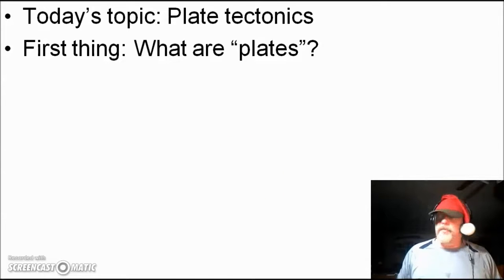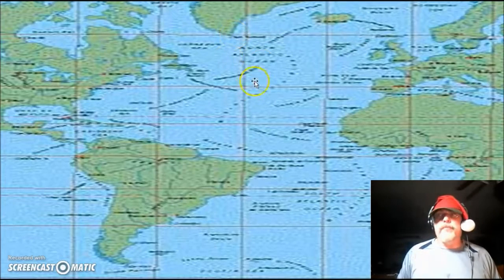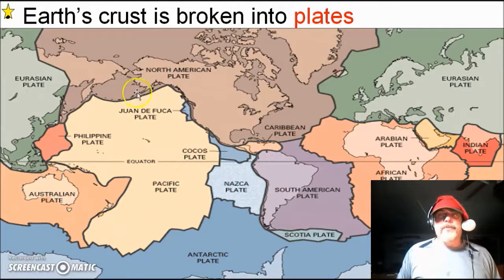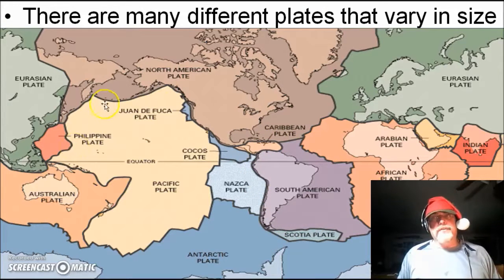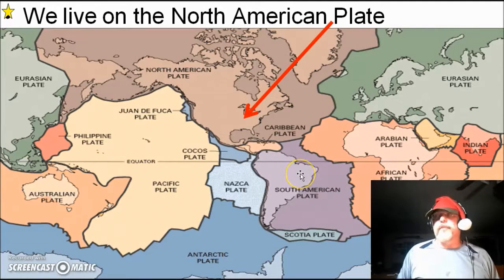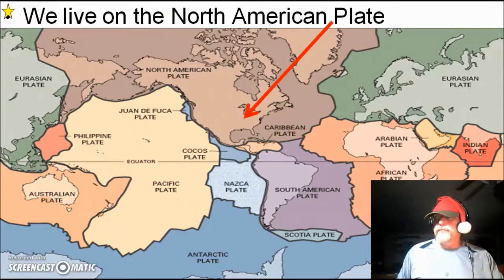The first term we need to understand in plate tectonics is 'plates.' You're familiar with the word plate, but here it means something different. Looking at world maps you see independent continents that seem stable with water between them. What you might not know is that the Earth's crust is actually broken into several different plates — big pieces of crust that are cracked and broken. They vary in size: very large ones like the North American plate and the Eurasian plate, and smaller ones like the Nazca plate and the Indian plate, which are also very important and create interesting geological effects.